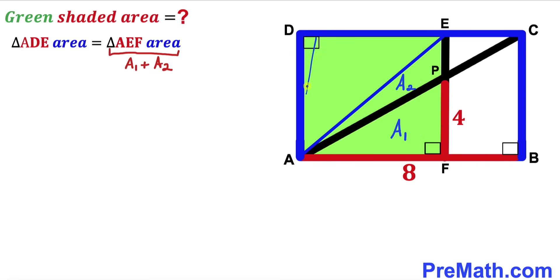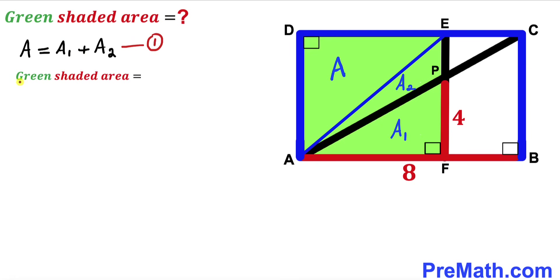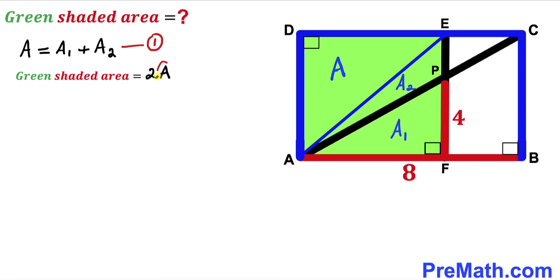I'm going to label the area of triangle ADE as uppercase A. So uppercase A equals A sub 1 plus A sub 2, and I'll label this as equation 1. The whole green shaded rectangle area equals 2 times the area of triangle ADE, which is 2 times uppercase A. Our task is now to find the value of uppercase A.